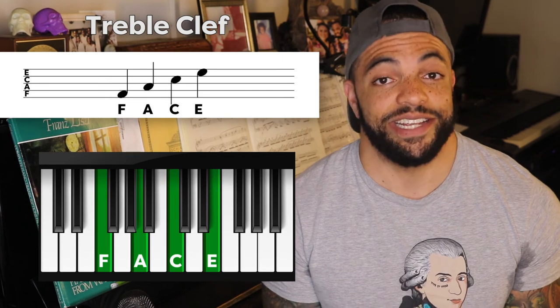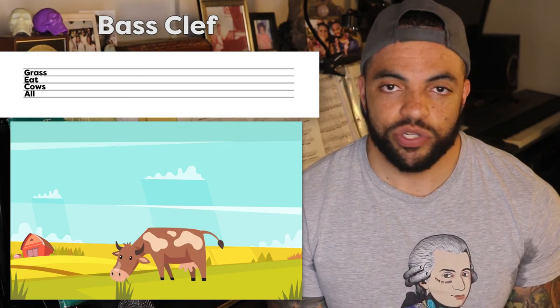The more you use the mnemonic devices — FACE for treble clef spaces, All Cows Eat Grass for bass clef spaces — the better you'll orient yourself on the keyboard, and eventually you'll just memorize it. You'll see a note and instantly know it's an F, an E, a D. It just takes repetition. Use apps on your phone, look at more written music, and the easier it will get. The learning curve is a little steep at first, so don't be discouraged — just chip away at it a little bit every day.